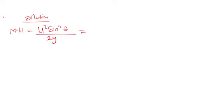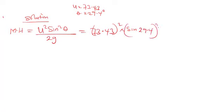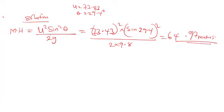below it. So this now is equal to: the value of our u was given to us as 73.43. Let me write it: u = 73.43, θ = 29.4 degrees. So (73.43)² × (sin 29.4)² all over 2 × 9.8, which is equal to 64.97 meters. You're talking about height, maximum height. That's it for maximum height.